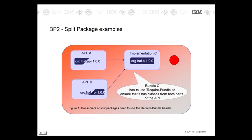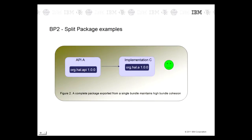If bundle C uses Import Package, the OSGI framework will only wire it to one of the API bundles. The solution to a split package is to put the same package in one bundle. If you have a package that makes sense to split between bundles, then you do not have high cohesion between those two parts and you should use two different packages.